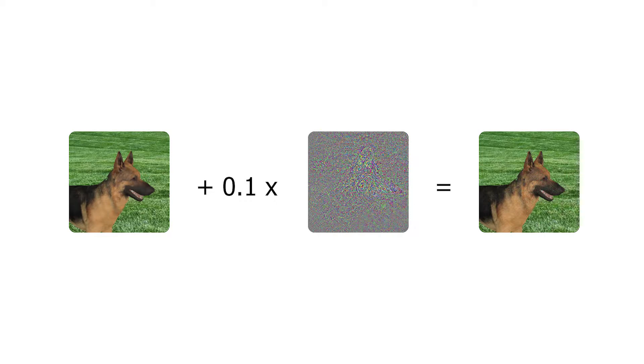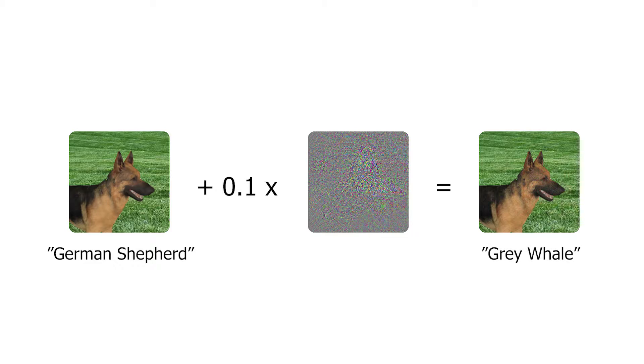Adversarial examples take this to the extreme by often being visually identical to their base image for humans, while being classified incorrectly by a convolutional neural network with 100% confidence.